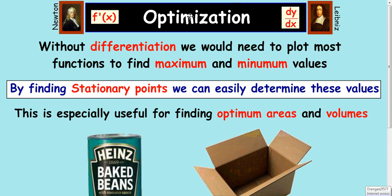In this lesson, we're going to look at optimization. Optimization is a part of differentiation. We can use it to find maximum and minimum values, which is very useful for finding optimum areas and volumes.